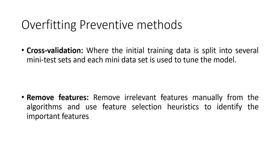The second method is remove features. When we make a training data set, it obviously has some features that are understood by your model. But if your training data set has some irrelevant features, then the training of the model is not efficient. What we try to do is remove irrelevant features from your data set using feature selection heuristic algorithms, and only identify the important features to provide for training your model. This prevents overfitting. The first method is cross validation and the second is remove features.